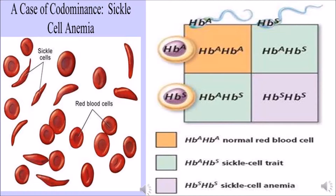The allele for normal hemoglobin A is HbA, and for abnormal hemoglobin S (which has sickle-shaped cells) it is HbS. In a cross of two carrier parents, both having alleles HbA HbS, after the cross we get a ratio of 1:2:1 — that is, 25% normal homozygous (HbA HbA) with normal red blood cells; 50% carrier heterozygous (HbA HbS) with a mixture of sickle-shaped and normal red blood cells, which shows co-dominance, as both alleles are expressed equally.